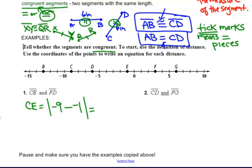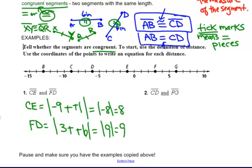This is equal to, don't forget two negatives make a positive, the absolute value of negative 8, which is 8. Now, I'm going to find FD. Absolute value. First point F is at 3. D is equal to, I'm sorry, D is at negative 6. Two negatives make a positive. Absolute value of 9 equals 9.